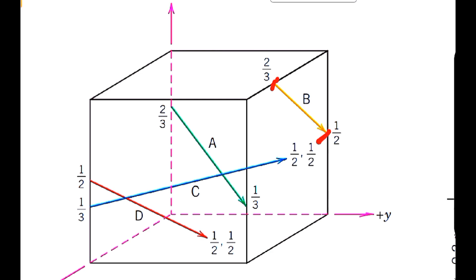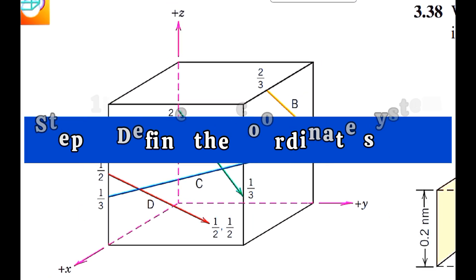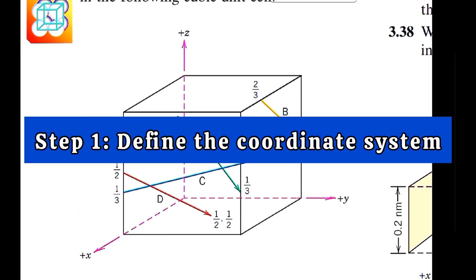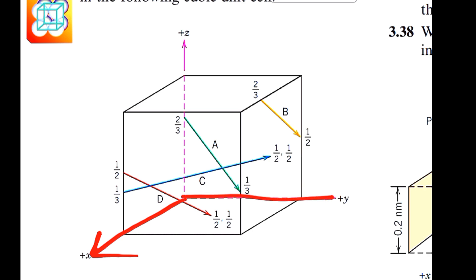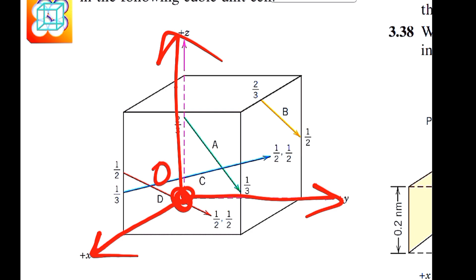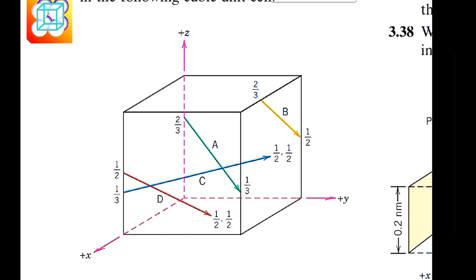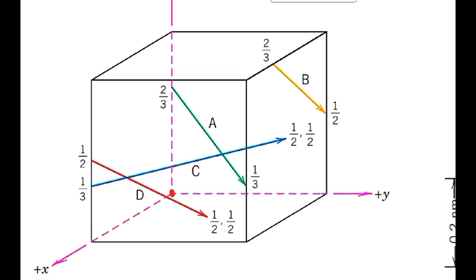Now let's get started with step one. Step one is to define the coordinate system. We can see the coordinate system is predefined and we'll be following the same coordinate system. This is the positive x-axis, this is the positive y-axis, and this is the positive z-axis. This point is the origin, so you should keep in mind what coordinate system we'll be using.